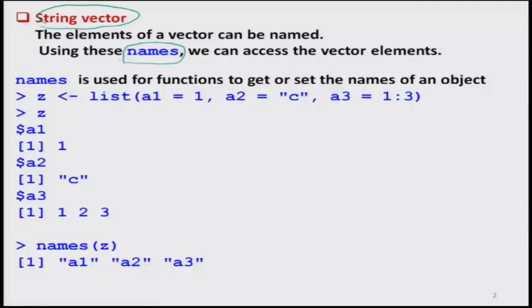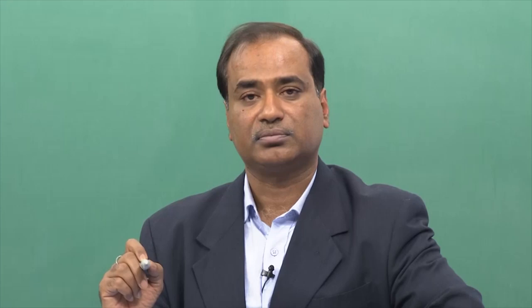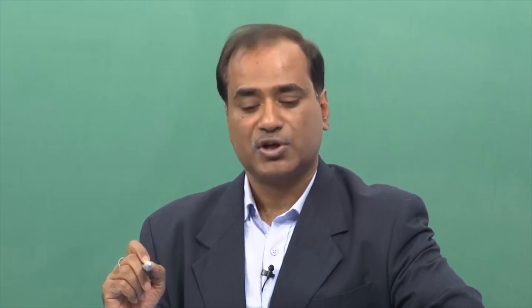All the elements of a vector can be named. You may recall that when you went to school and college, your parents gave you a name, but inside your college you were given a new name — your roll number. As soon as you say your roll number, your unique identity is established. Similarly, whenever we deal with vector elements, all elements can be given a unique name, and using those names we can access any element of that vector.